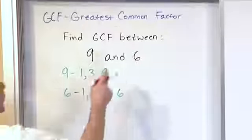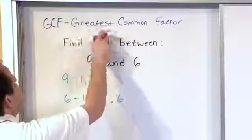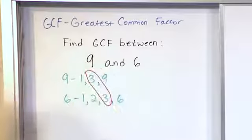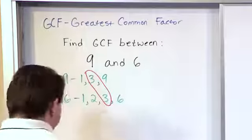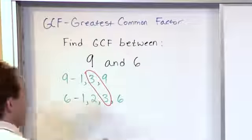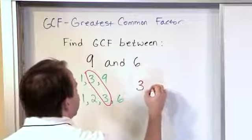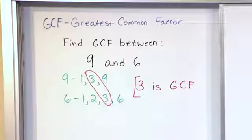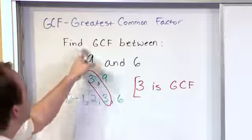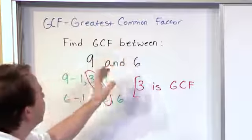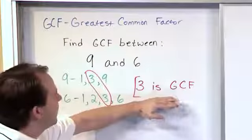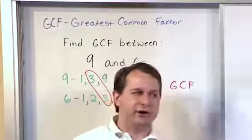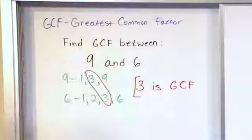So now we have two lists of numbers — these are the factors of nine, and these are the factors of six. Then all we do is circle the greatest, the largest one that's common to both of these lists. In that case, we have the number three. So what you would write for your answer would be: three is the greatest common factor. That's all you need to write down. The number three is the greatest common factor — it is the largest number that is a factor of both of those original numbers.